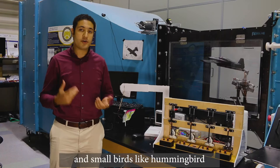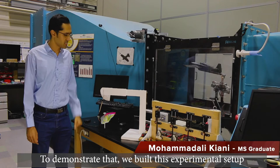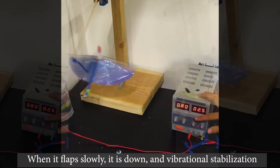To demonstrate that, we built this experimental setup. It's a two degree of freedom flapping robot. It moves along this arc depending on how fast it flaps. When it flaps slowly, it's down and vibrational stabilization is not enough. The system is unstable as you see.